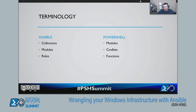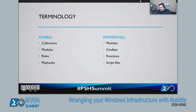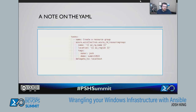Next we've got roles in Ansible, which you can think of as functions in PowerShell. These are what most people using Ansible would start creating — their own roles — just like creating your own functions and bundling those into collections for reuse. Then finally we've got playbooks, which you can think of as script files — the things you're actually running to invoke the changes you want on your endpoint. Ansible is all YAML, so let me quickly run through what you're going to be seeing in the demo.